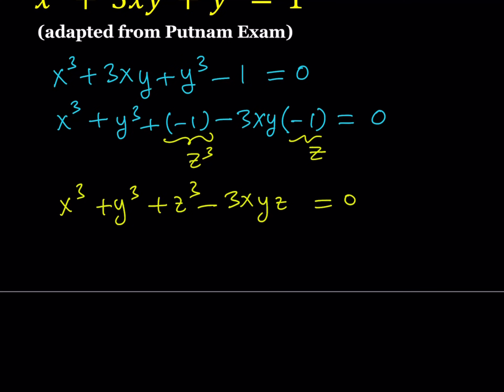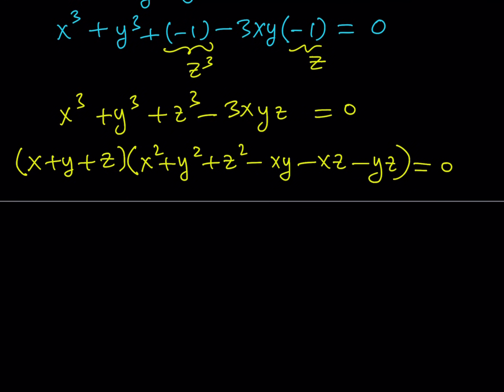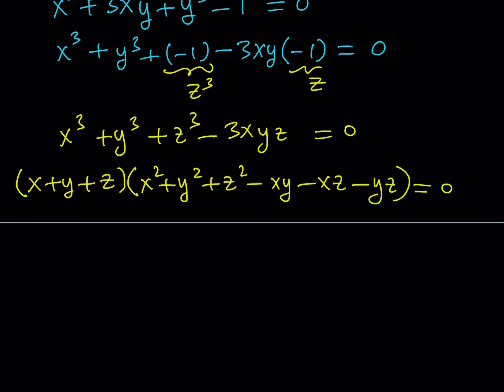We get x cubed plus y cubed plus z cubed minus 3xyz equals 0. Now this is a well known identity. This expression is factorable. You can write this expression as x plus y plus z multiplied by x squared plus y squared plus z squared minus xy minus xz minus yz. I'm not going to get into how we can factor this because that's probably going to be another video. So now when I set this equal to 0 one thing to remember is that z is a temporary variable. I just needed it to complete my identity and make it factorable or easier to factor.